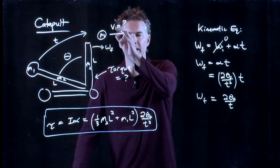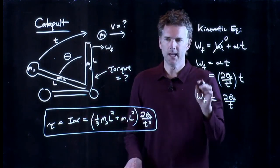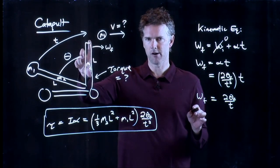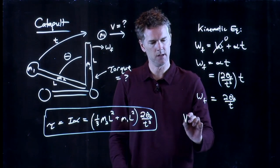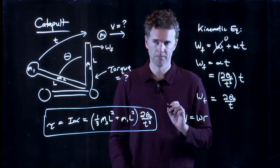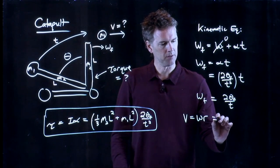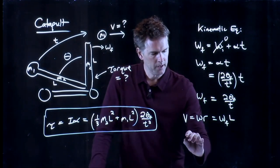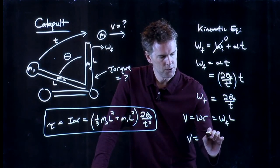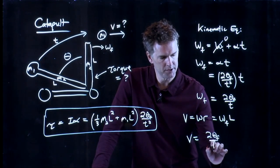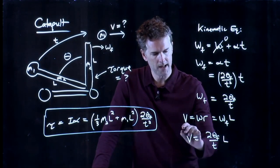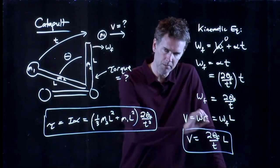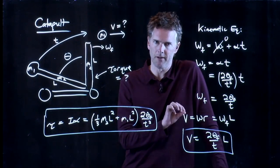What we're looking for is V. And V relates to omega by the radius. How far are you from the axis of rotation? V is equal to omega times R. So in this case it's going to be omega final times L. And we get two theta F over T, all of that times L. And now if you have all those numbers you can plug it in and calculate what the final speed of the cannonball is.